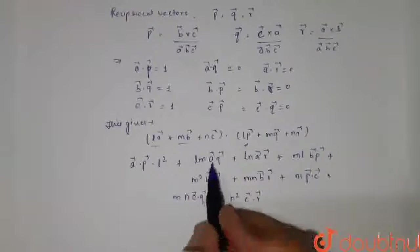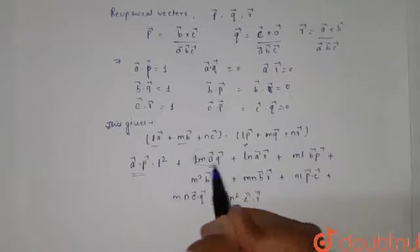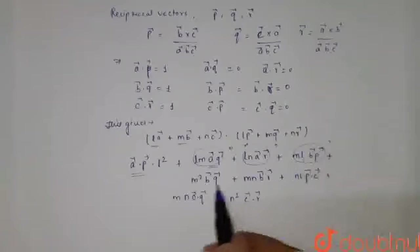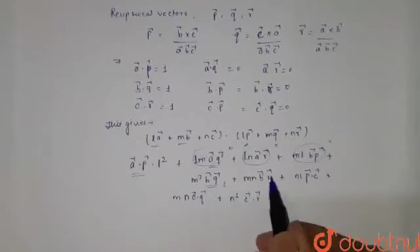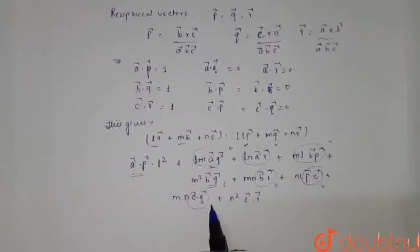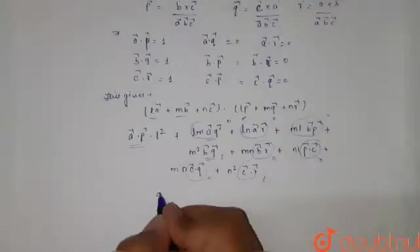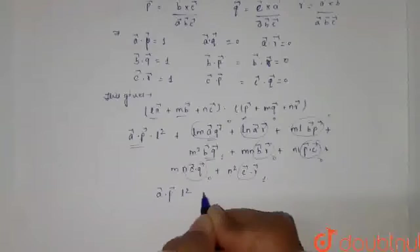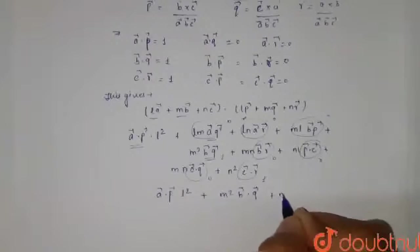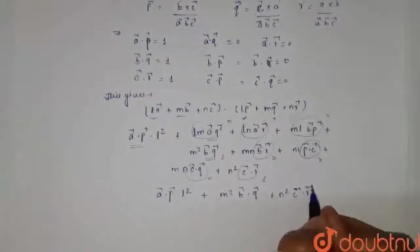Now here we already know that A into P is 1, A into Q is 0 so these terms become 0, A into R is 0 this becomes 0, B into Q is 1, B into R vector is 0, P into C vector is 0, C dot Q vector is 0 and C dot R vector is 1. So what we are left out with? A vector dot P vector into L square plus M square into B vector dot Q vector plus N square C vector dot R vector.